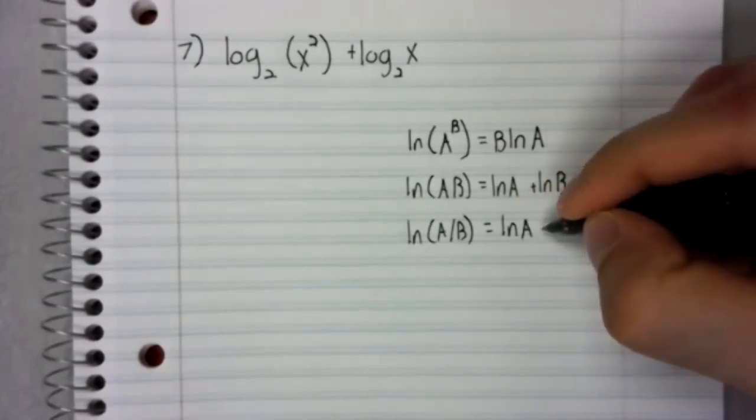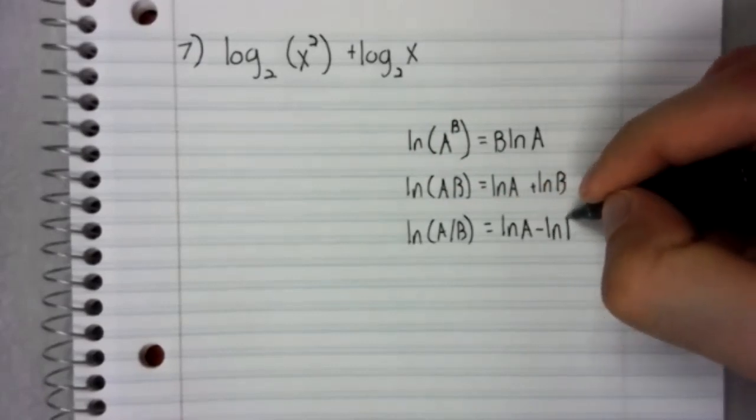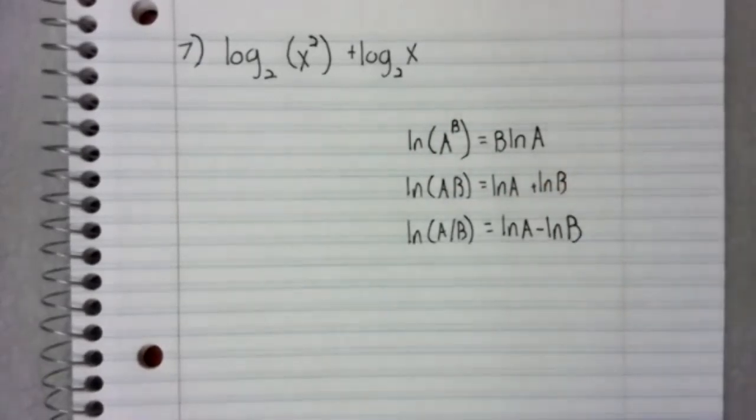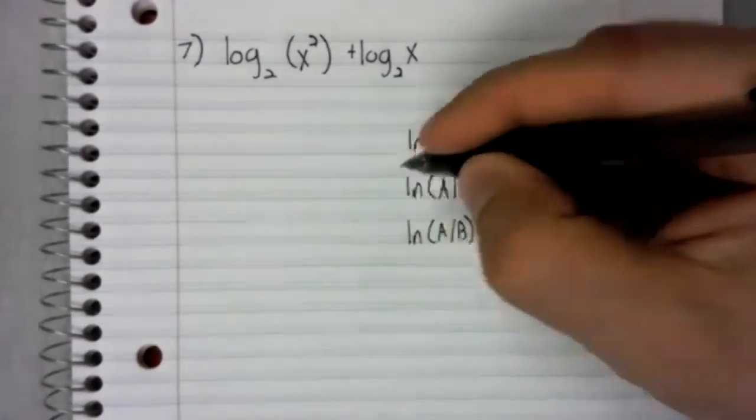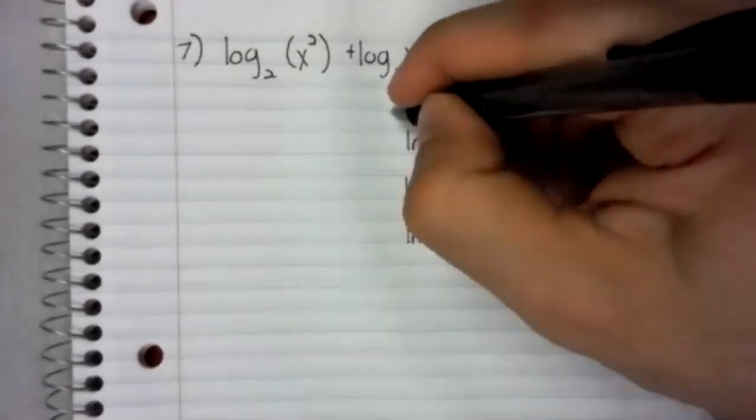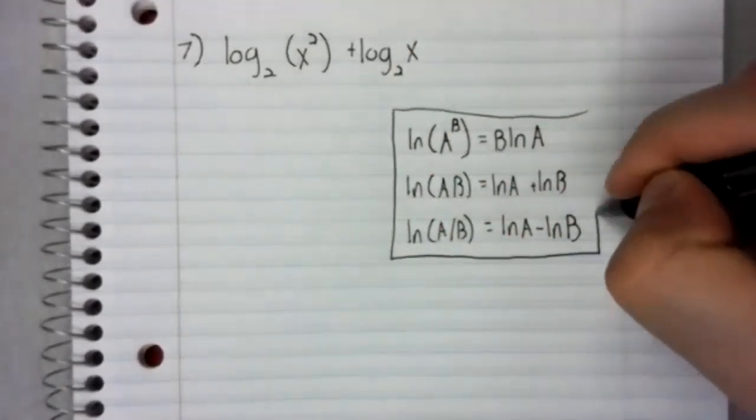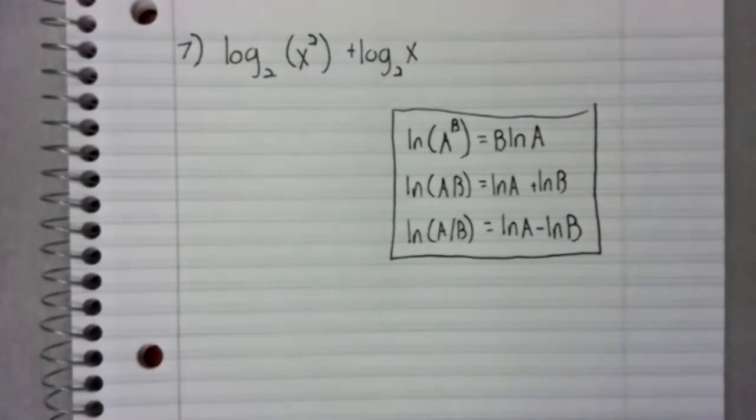a product rule, and a quotient rule. So in number seven, we only need one of them.